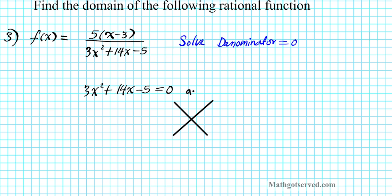AC goes on the top and b goes on the bottom. In this problem, a is 3, b is 14, and c is negative 5. So AC is 3 times negative 5, which is negative 15, and b is 14.